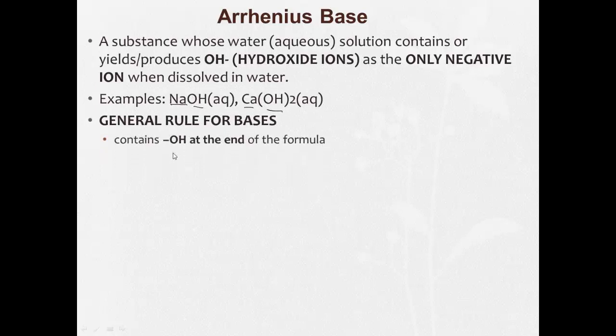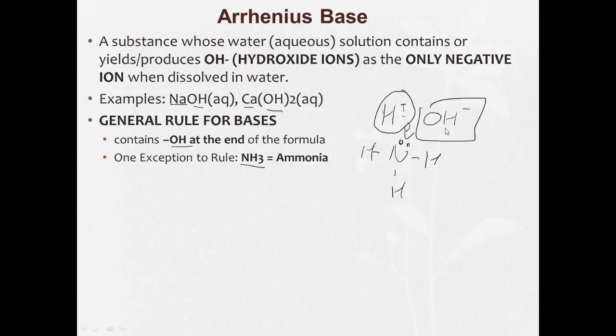Remember as general rule, bases contain OH at the end of the formula. There is an exception, NH3 is ammonia. We dissolve that in water, that actually is a base. What happens is the water molecule splits up into H plus and OH minus. And NH3 has this lone pair of electrons that this H plus is attracted to, leaving that OH minus as the negative ion in the solution.